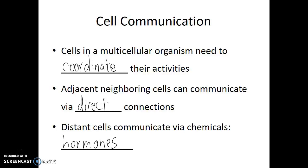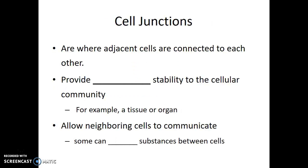We'll talk about two situations: communication between direct neighbors and communication between distant cells. The connection point between two neighboring cells we call cell junctions. Cell junctions provide a variety of different functions. They provide structural stability to the cellular community — for example, a tissue or an organ is made up of a bunch of cells directly connected to each other. They can also allow neighboring cells to communicate and even pass substances from one cell to another.